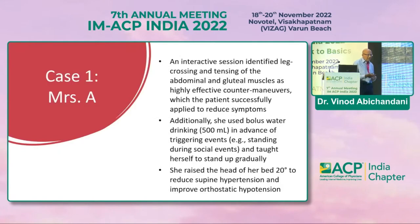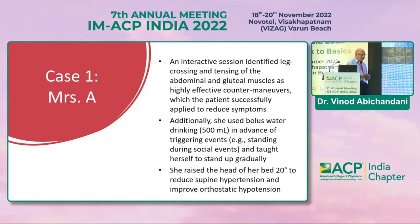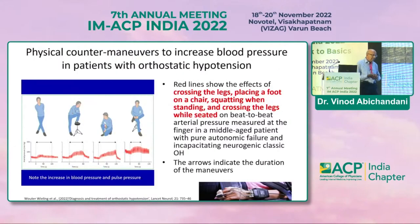The patient had devised counter maneuvers for herself, including tensing of abdominal and gluteal muscles, which proved effective. She also used bolus water drinking in advance of triggers like prolonged standing at social events, taught herself to stand up gradually, and raised the head of her bed by 20% to reduce supine hypertension and improve orthostatic hypotension. Physical counter maneuvers beneficial for OH include crossing the legs, placing a foot on a chair or stool, squatting when standing, and crossing the legs while seated.